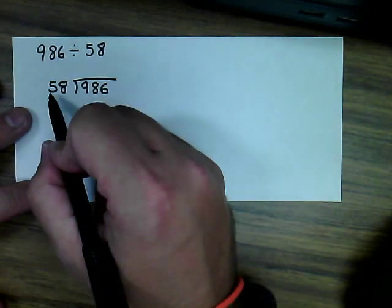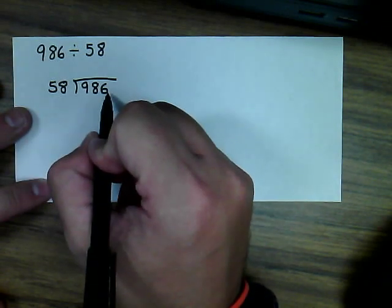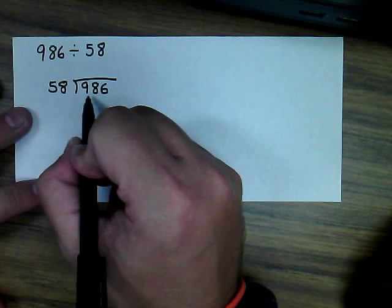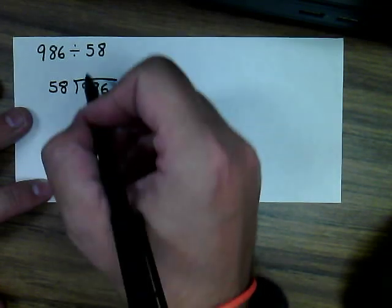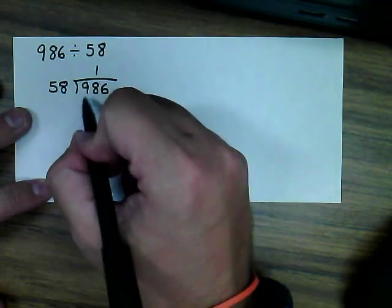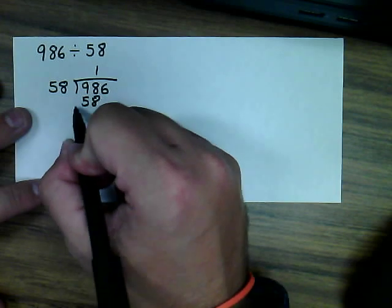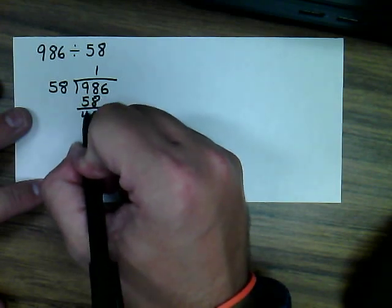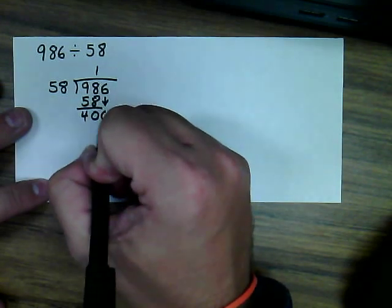So if I want to divide 58 into 986, I want to use those first two items and do 58 into 98 one time. One times 58 does equal 58, and that seems simple enough, but it gets a little more difficult when you bring down the 6.